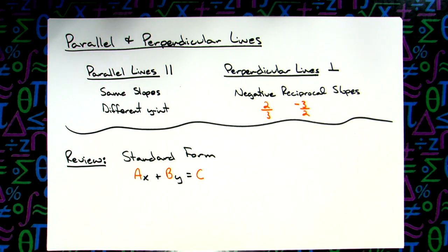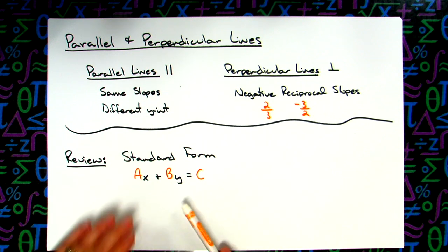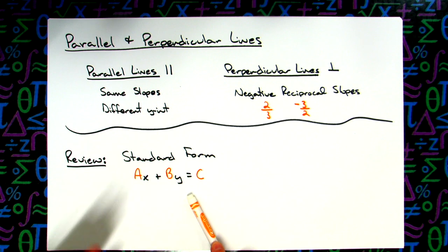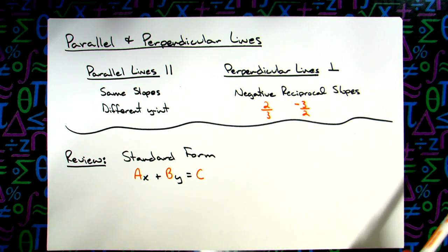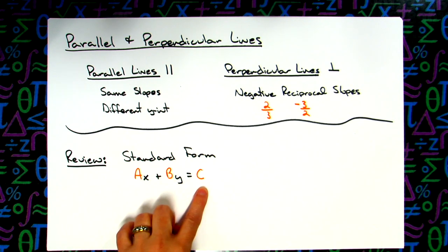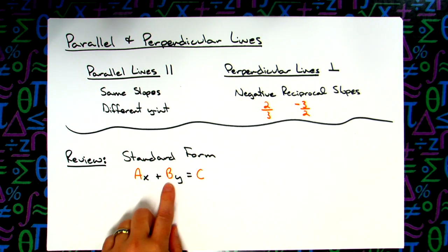Earlier in the block we reviewed point-slope form and slope-intercept form. Standard form is another one that you've worked with pretty much in Algebra 1 and Algebra 2. You've got Ax plus By equals C. I color-coded this for where the numbers are going to go.